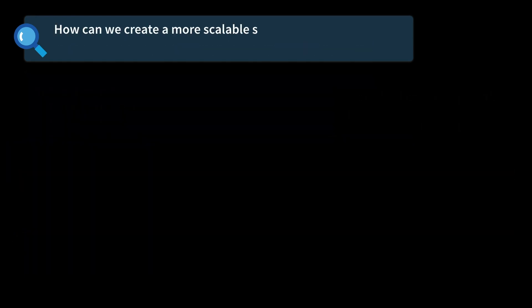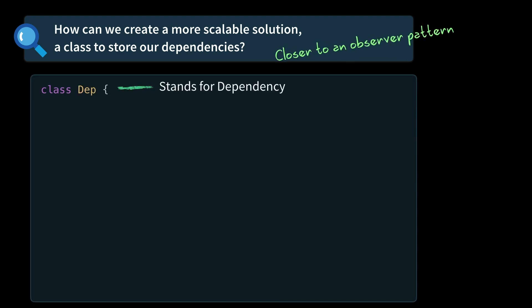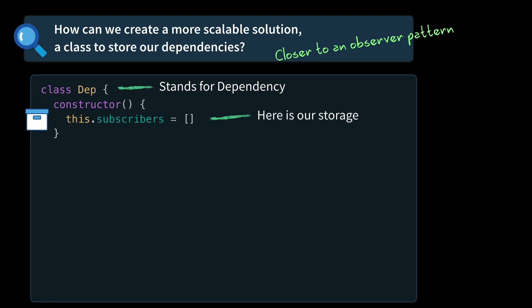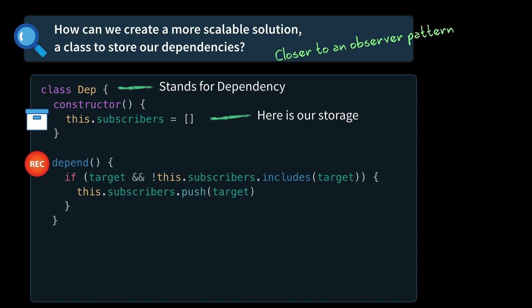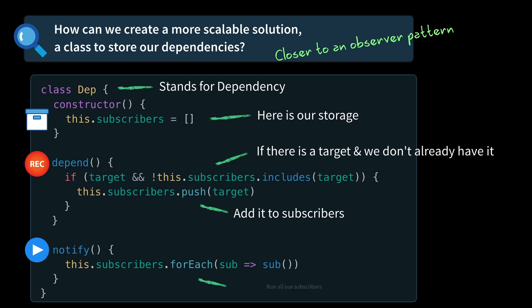Next, let's create a more scalable solution, maybe creating a dependency class, and we'll use the observer design pattern. Here you can see we have a Dep class — that stands for dependency. In our constructor, we'll instantiate our storage, this time calling it subscribers, because we're following the observer pattern. Then to save our target, we'll create a depend function, first checking to see if our target exists and if it's not already inside of our subscribers array, we'll add our target into our subscribers. The depend function is replacing our record function from earlier. Then the notify function will replace our replay function, going through each of our subscribers and running them. Just some foreshadowing — Vue also has a Dep class which kind of mimics this functionality, which we'll see later.